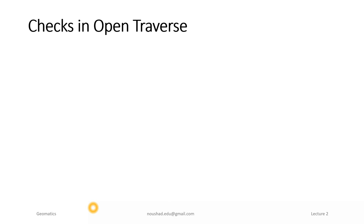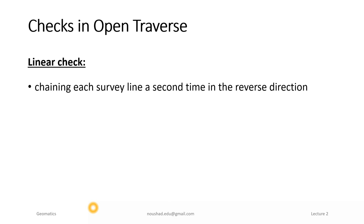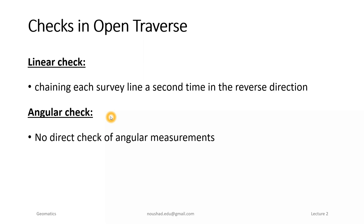Now, in the case of an open traverse, for both linear check and angular check, we have to survey or chain each survey line a second time. In the case of an open traverse, we have to go for some type of indirect check.